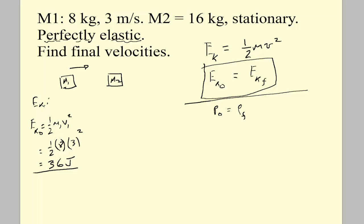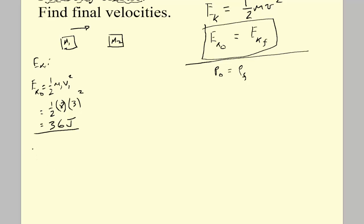The M2 has no kinetic energy, so the initial kinetic energy is 36 joules. Since we're in the initial world, let's talk about momentum. The initial momentum is M1 V1 plus M2 V2, so 8 times 3 plus zip because V2 is not moving. So we have 24 kilogram meters per second, units of momentum. And that's all there is.